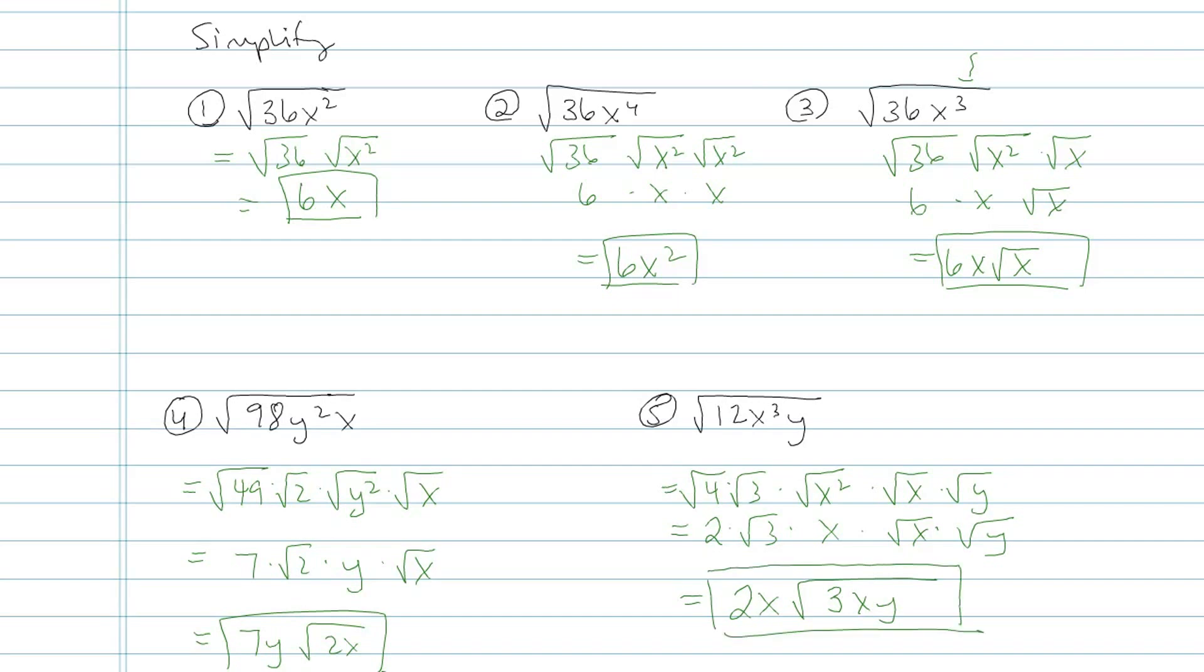So this pencast here is about what to do if you have numbers and variables. And we've looked at ones that are perfect squares as well as ones that are not perfect squares.